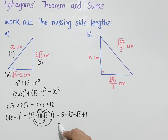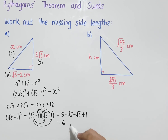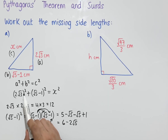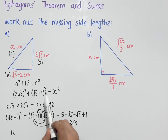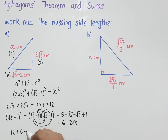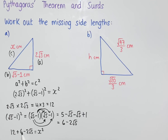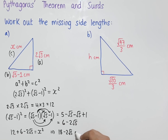Simplifying: 5 + 1 = 6, and −√5 − √5 = −2√5. So (√5 − 1)² = 6 − 2√5. We can now write 12 + (6 − 2√5) = x². Simplifying: 12 + 6 = 18, giving us 18 − 2√5 = x².